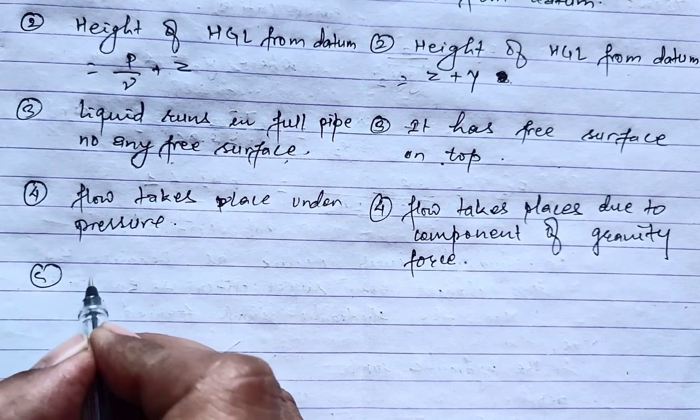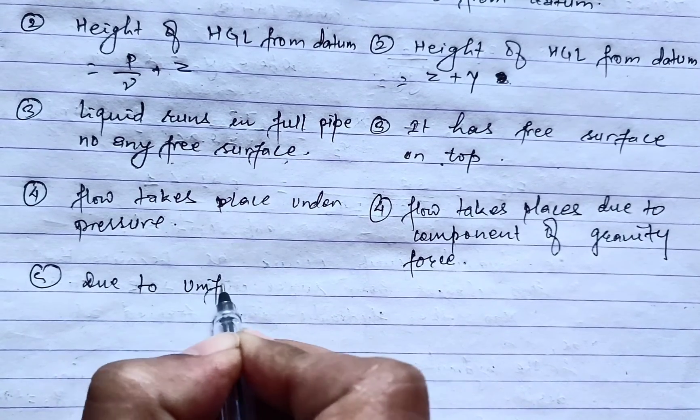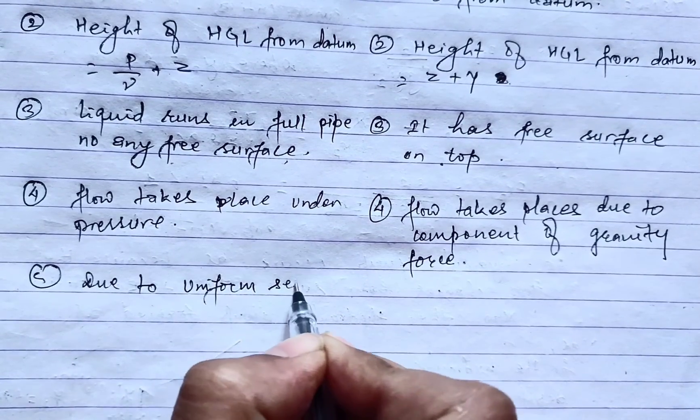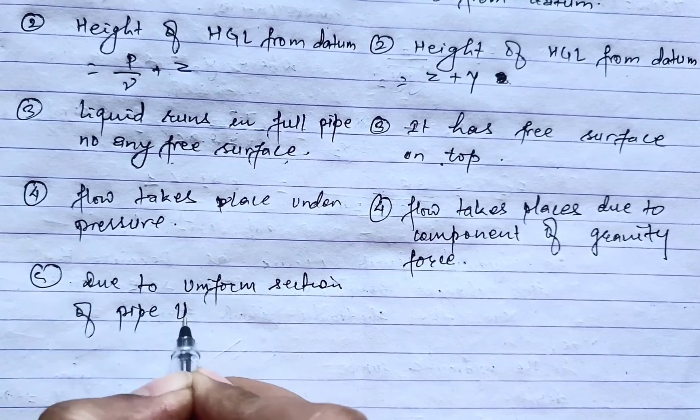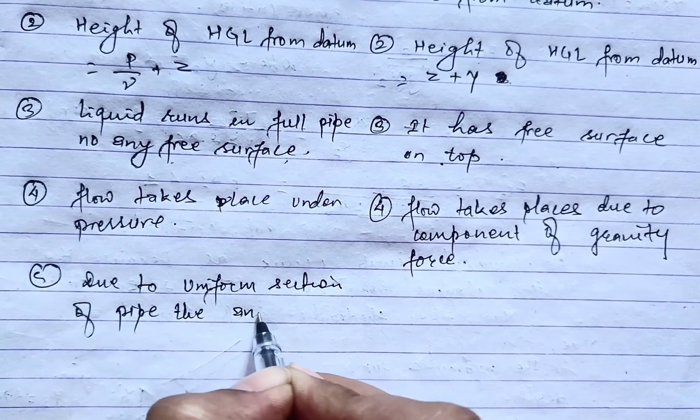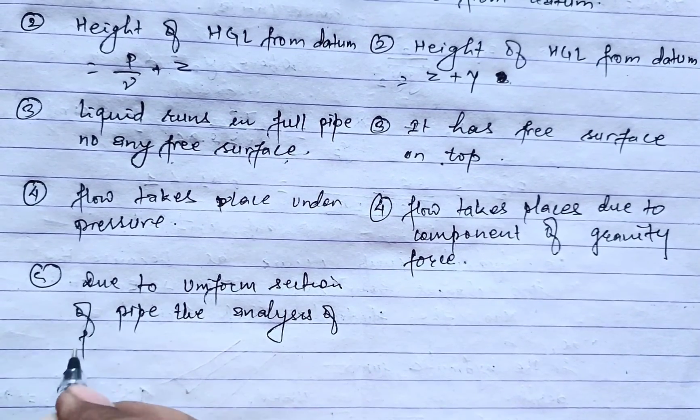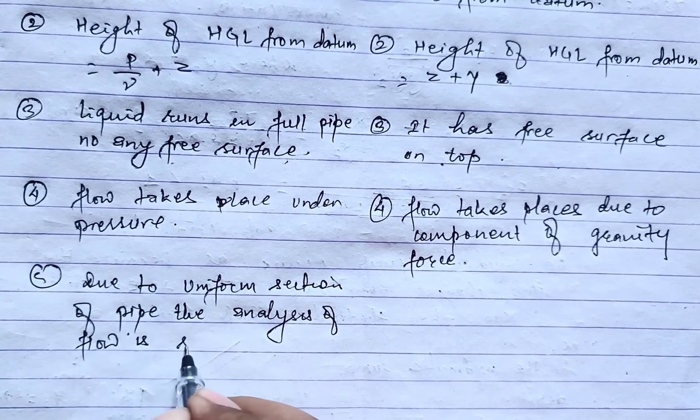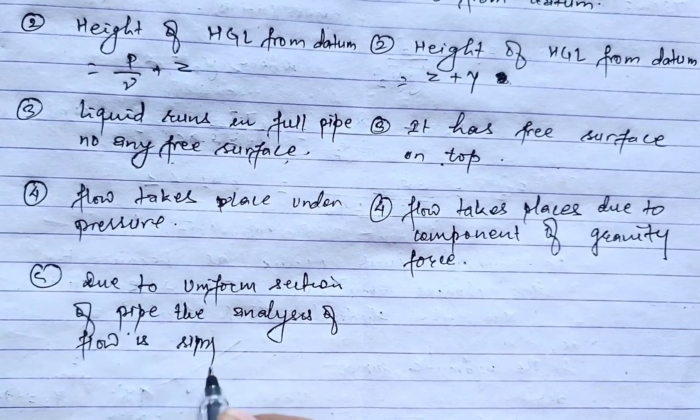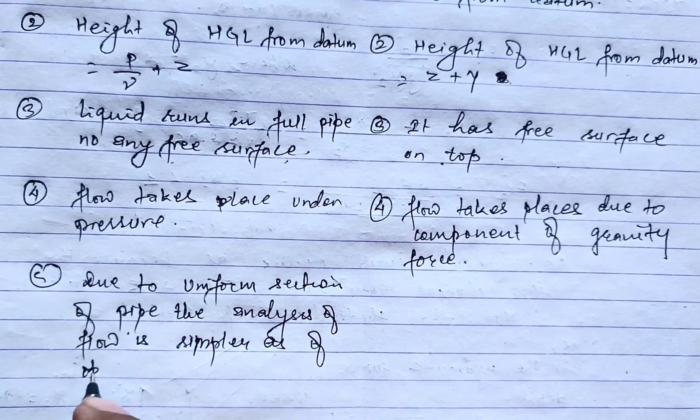Due to uniform section of pipe, the analysis of flow is simpler as compared to open channel flow.